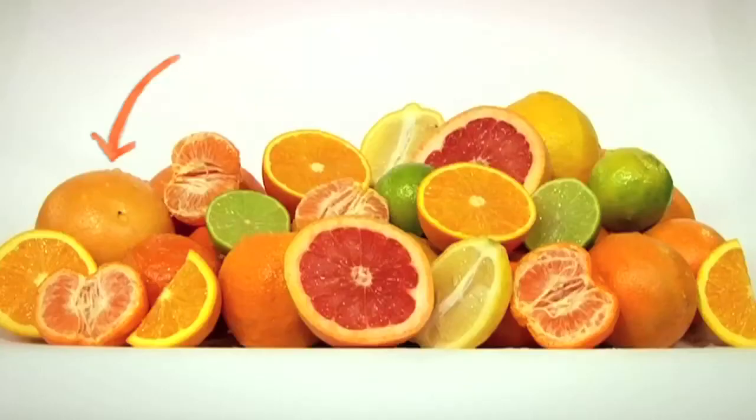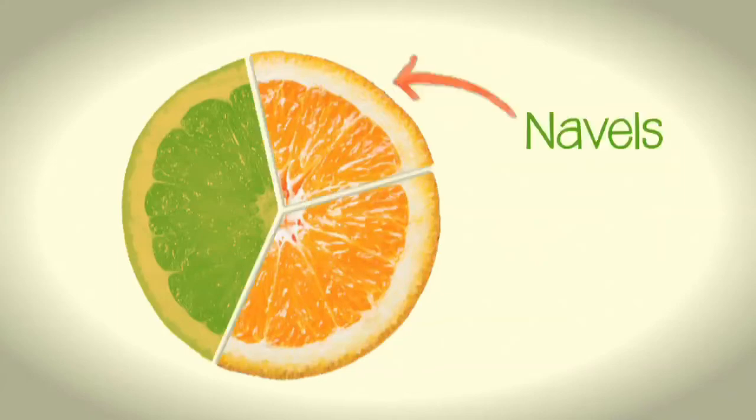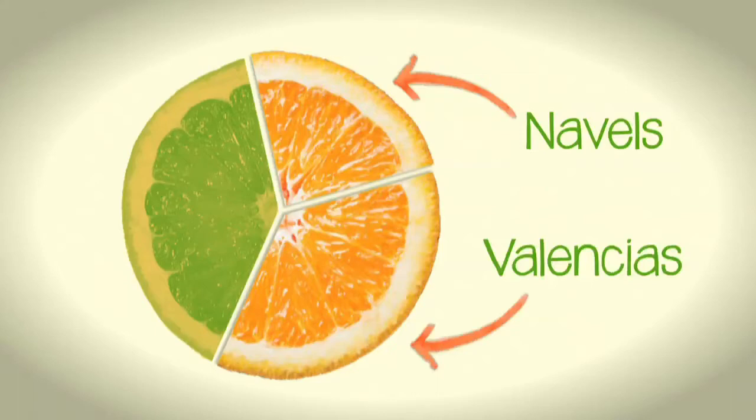We will start with the citrus type that makes up the largest portion of production and exports from Southern Africa. Oranges make up about two-thirds of the citrus exports. Of the oranges that are exported, one-third is navels and two-thirds Valencias.